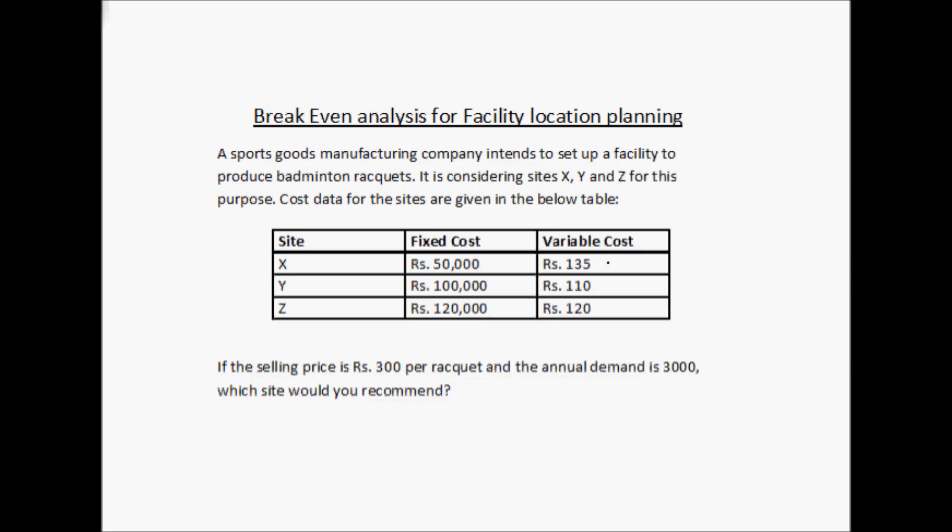And the variable cost, which is for each unit being produced at these facilities, is rupees 135 for X, rupees 110 for Y, and rupees 120 for Z. Now if the selling price is rupees 300 per racket and the annual demand is 3000, which site would you recommend?